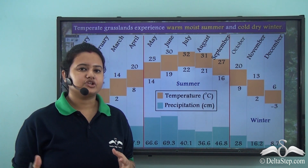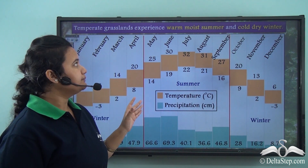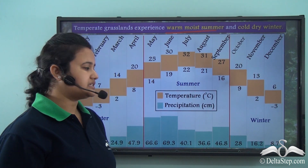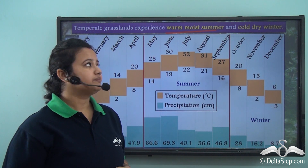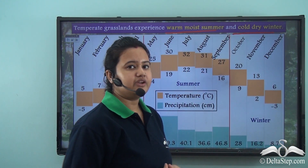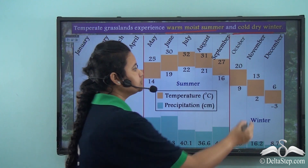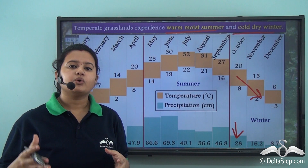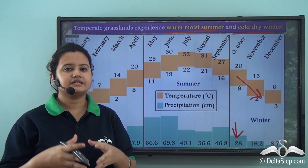Based on the temperature and precipitation patterns, temperate grasslands experience warm, wet summer — with high temperatures and average rainfall — that is short-lived, and cold, dry winter which prevails for longer duration. Overall, temperate grasslands experience cool and dry climatic conditions.